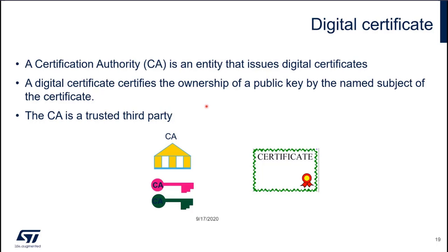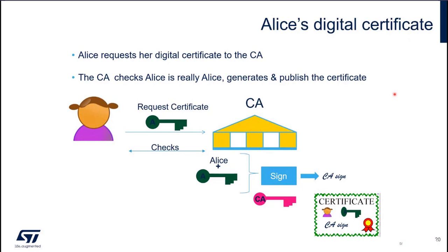This is what we are going to use. A certification authority issues the digital certificate and must be a trusted third party. The certificate certifies the ownership of the public key by the named subject. Taking the example of ALICE's digital certificate: ALICE requests her certificate from the CA. The CA verifies that ALICE is really ALICE, then generates and publishes the certificate — including information about ALICE, her public key, and a signature made with the CA's private key, which is kept secret. The CA's public key, however, is well known.